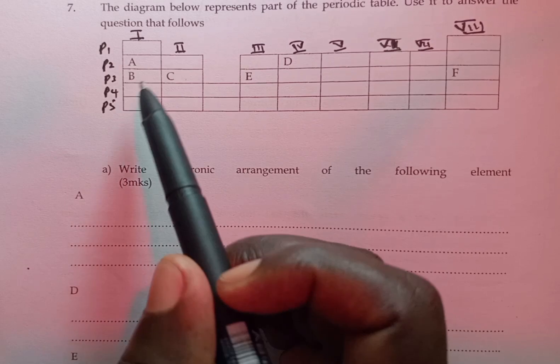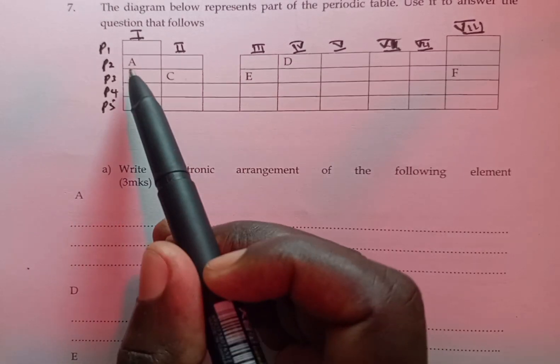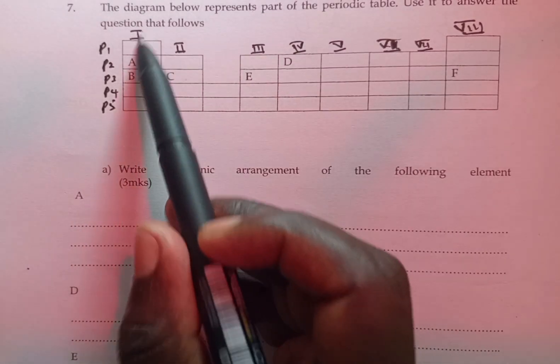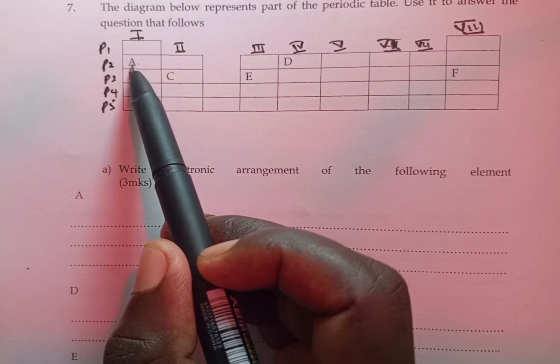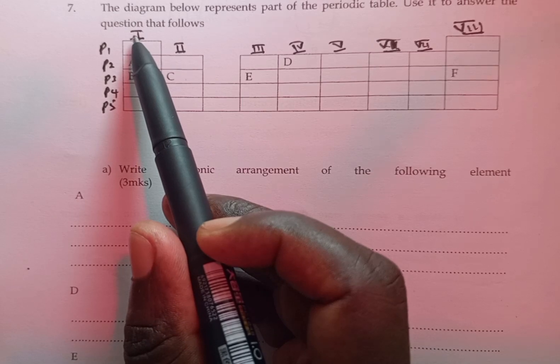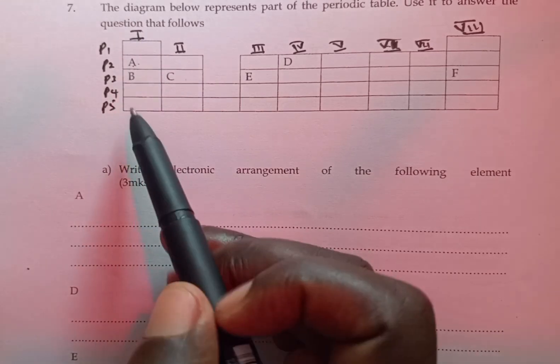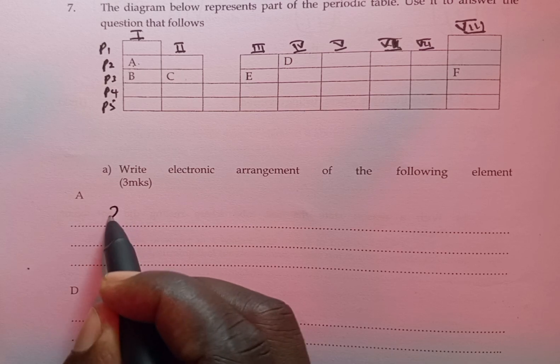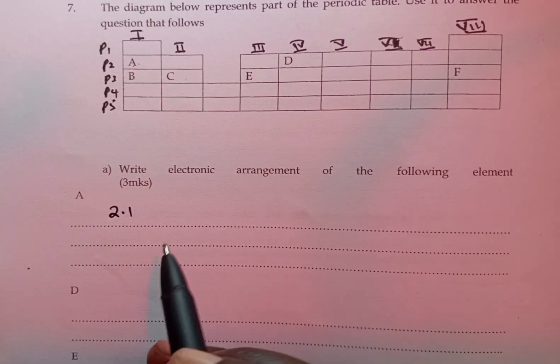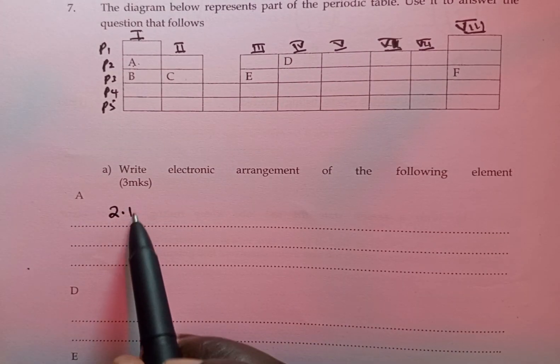For example, in element A, which is in group 1, period 2, period 2 means it's going to have two occupied energy levels, and the last energy level is going to have one electron. And therefore, A will be 2, 1, meaning period 2, group 1.